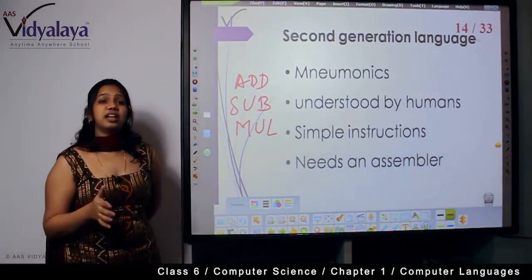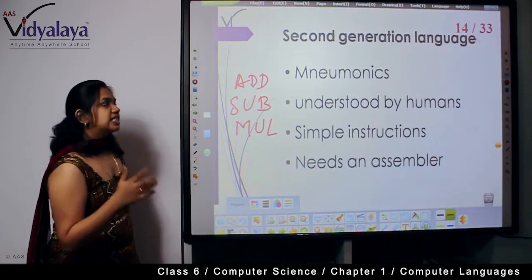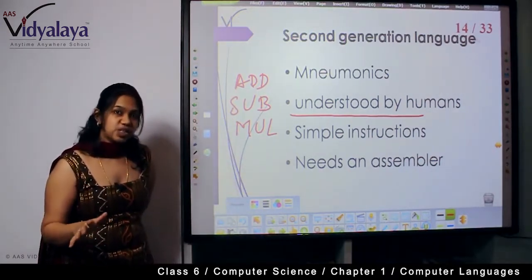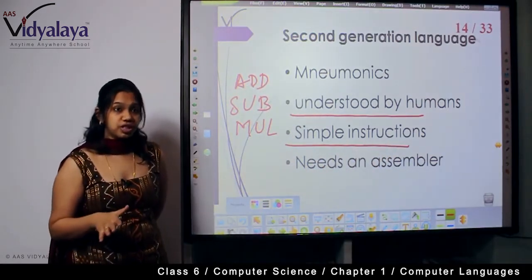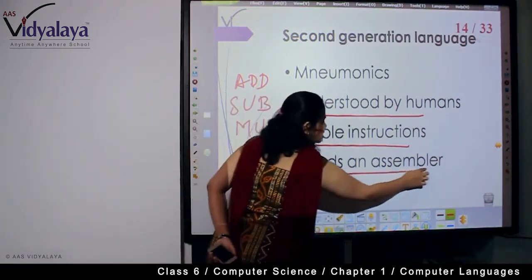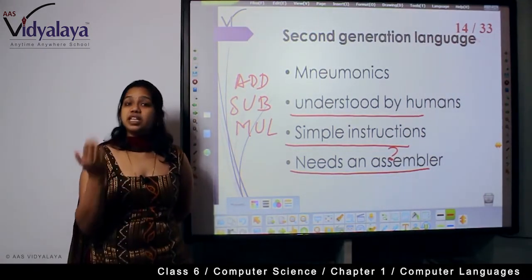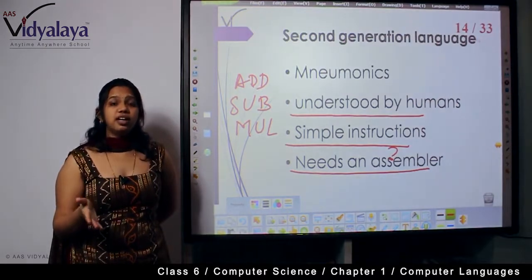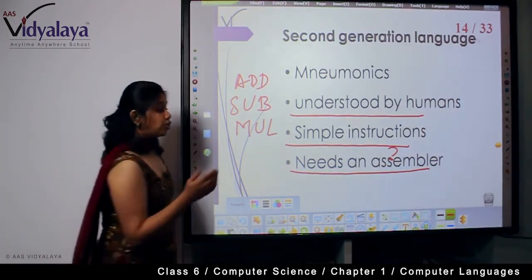Mnemonics like ADD, SUB, and MUL are words that human beings understand very well. The computer will understand them in an assembled format. So they are called assembly language. These are simple instructions easier for both humans and computers. However, the computer ultimately understands only zeros and ones, so how do we make the computer understand ADD or SUB? That is where an assembler comes in.